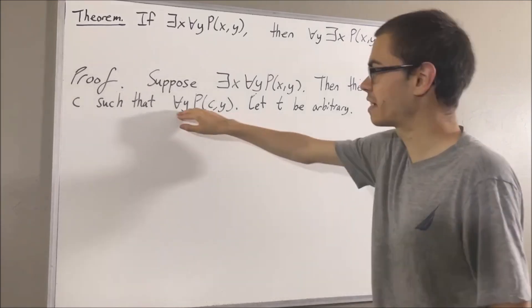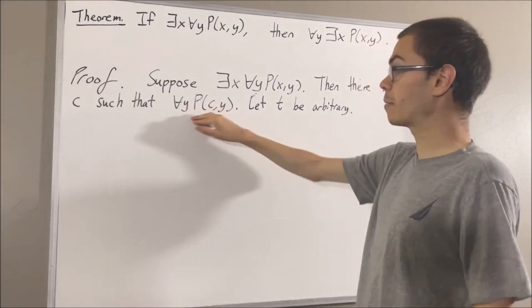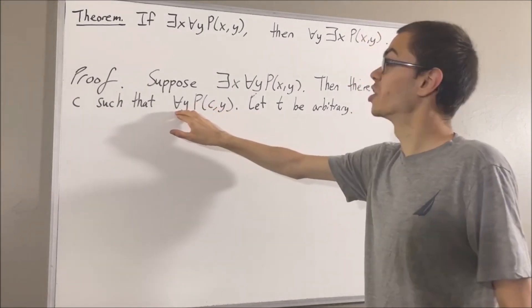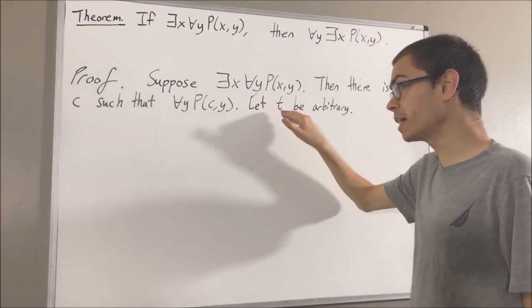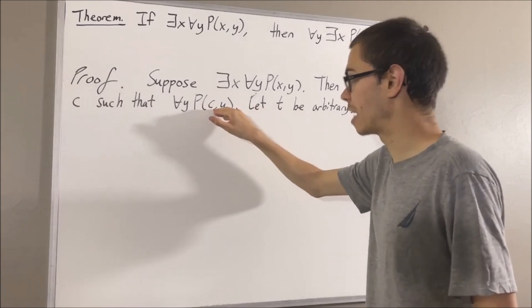Now since we know that this statement is true, this statement works for all objects. So it must work for our object t. So taking y to be t, we have that P(c,t).